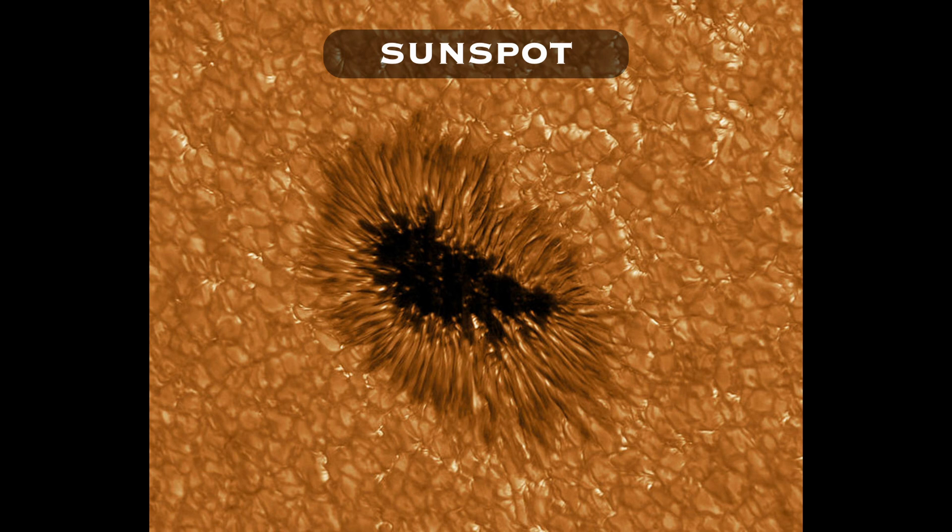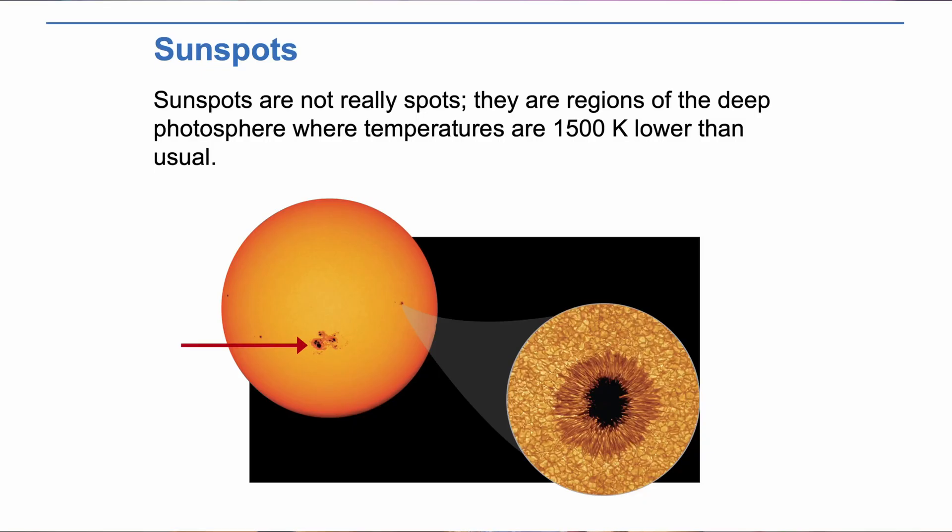Sometimes we can see sunspots when looking at the photosphere. We can see this layer using regular visible light images — we don't need a filter like we do for seeing other ranges of radiation, we just need a protective filter. Although they are not really spots, but rather regions where strong magnetic fields from the Sun entangle and prevent heat from reaching the surface, they appear darker. Sunspots tend to gather in clusters, and while they seem like small areas relative to the Sun, in reality a single sunspot is about the size of Earth.